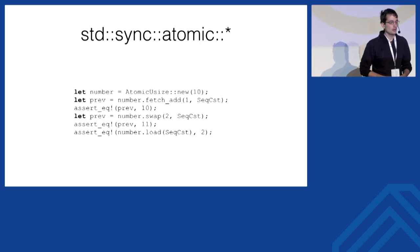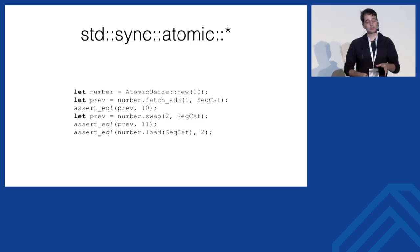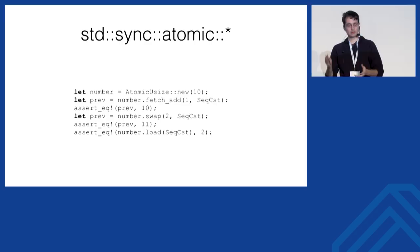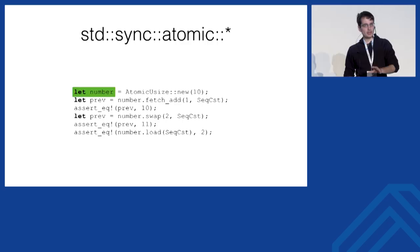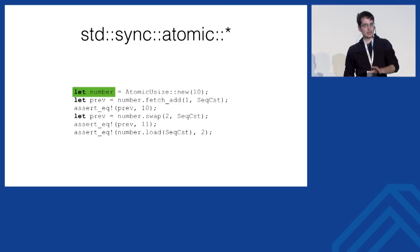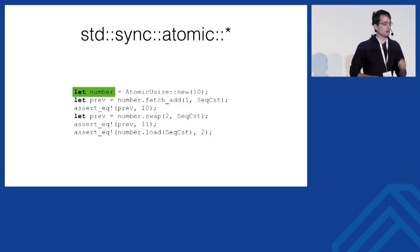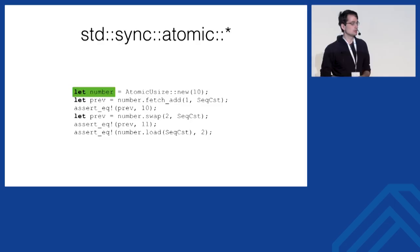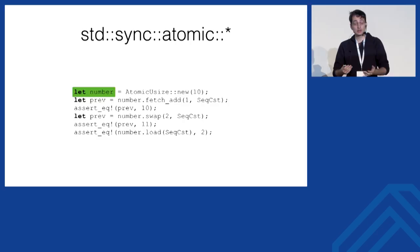We also have atomics, which are lighter weight than mutexes for sharing mutable memory between threads. These are similar to C11 atomics with the same memory model. We don't declare the number as mutable — we mutate through a shared reference. This isn't a data race because atomics require an ordering, like sequentially consistent (seq_cst). You can do atomic fetch-add, atomic swaps, atomic loads and stores — all you'd expect from C11 atomics.